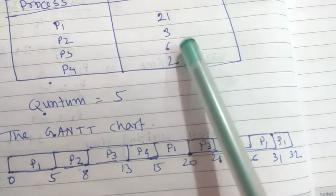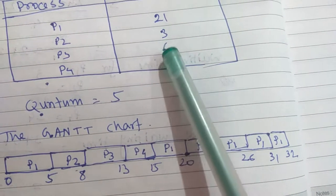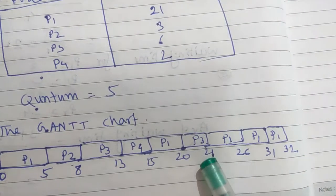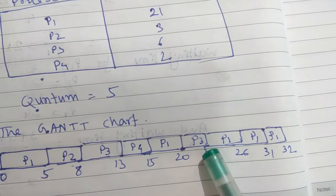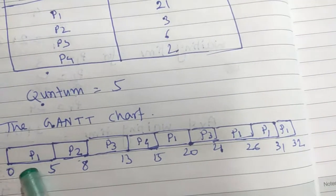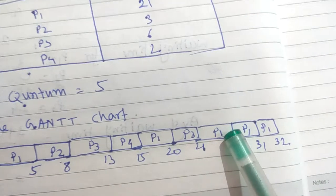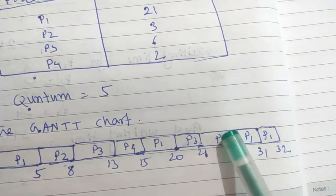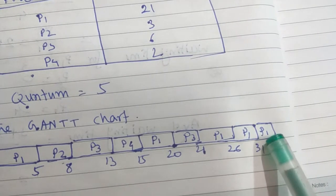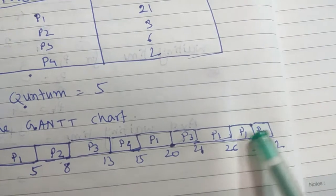P2 has already completed execution. P3 executes next — P3 already executed 5 milliseconds, so it has only 1 millisecond remaining and executes for 1 millisecond. P1 executes again for quantum time; it has now executed 5, then 10, then 15 milliseconds. Then 15 + 5 = 20 milliseconds. At last, 1 millisecond remains for P1, which executes from 31 to 32.